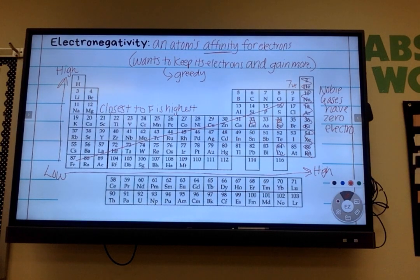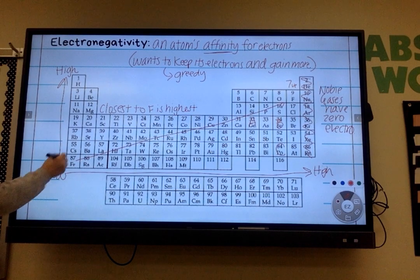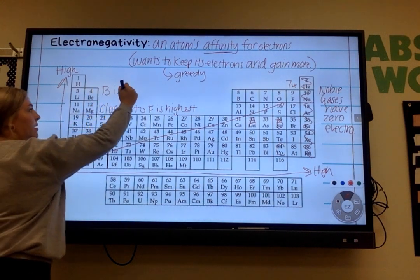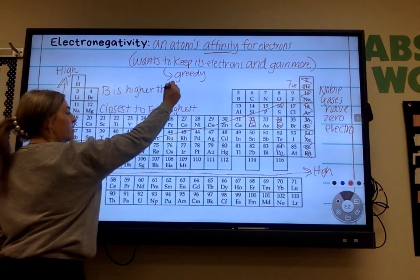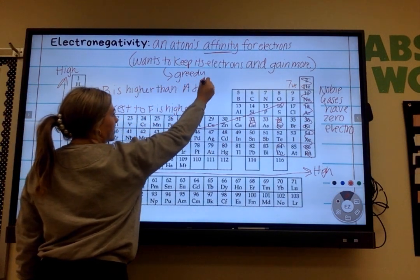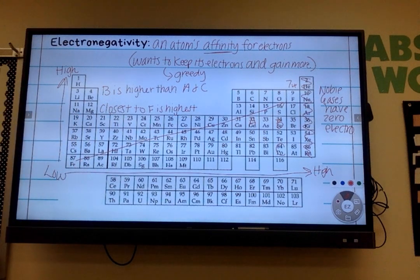So if I told you to find all three of those elements, or if I gave you a blank periodic table with just the A, B, and C, which one has the highest electronegativity? B. That's exactly how you need to read it. Are there any questions on this at all? Go ahead and write that. That B is higher than A and C, both of them. Good? All right.